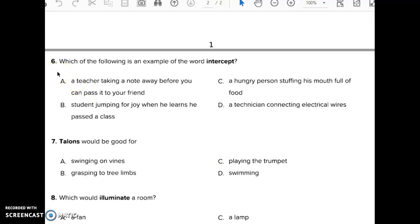Number 6. Which of the following is an example of the word intercept? A: A teacher taking a note away before you can pass it to your friend. B: A student jumping for joy when he learns he passed a class. C: A hungry person stuffing his mouth full of food. D: A technician connecting electrical wires.